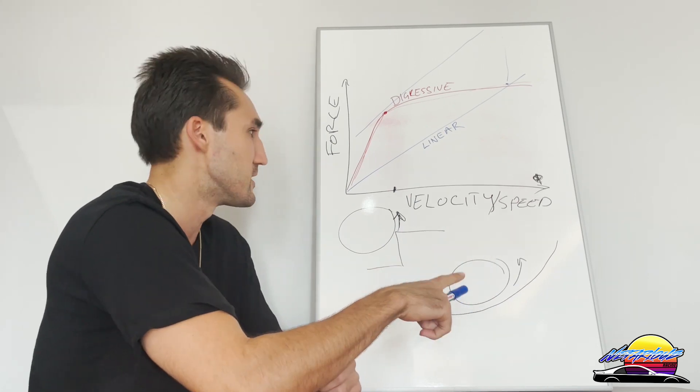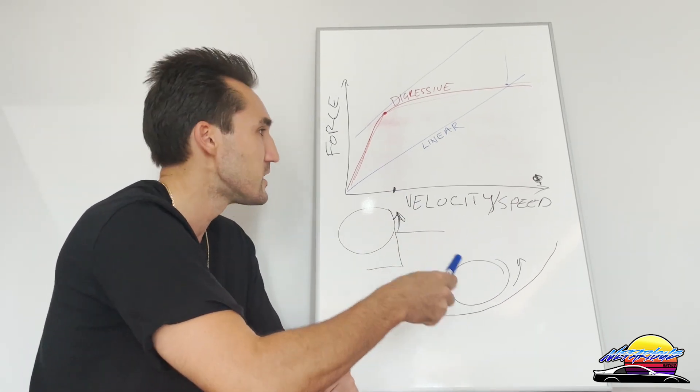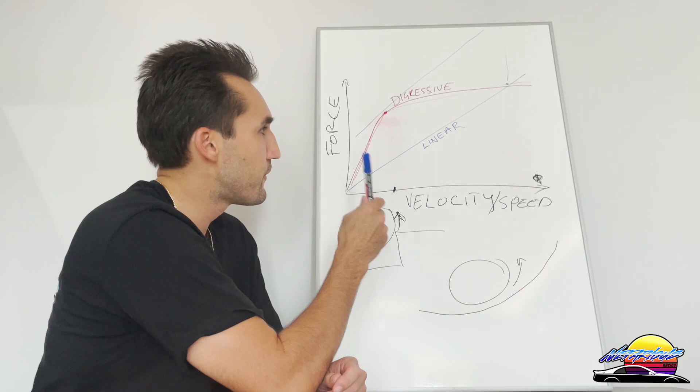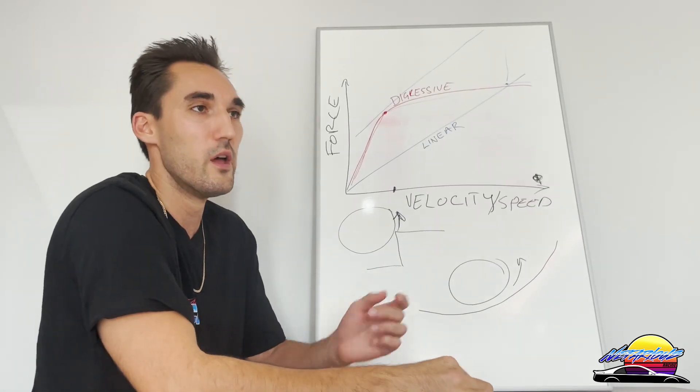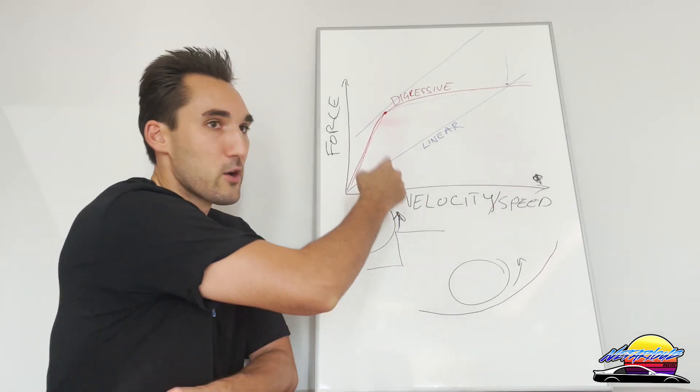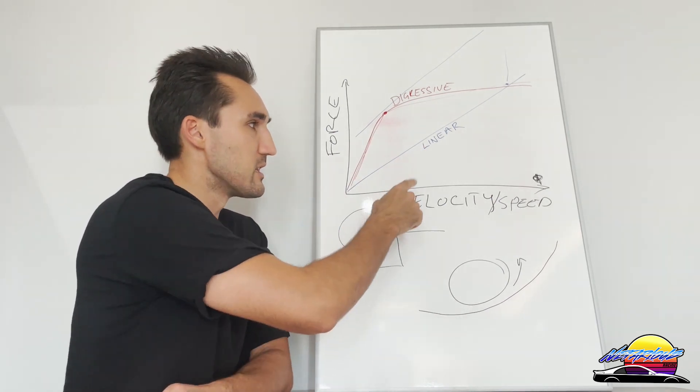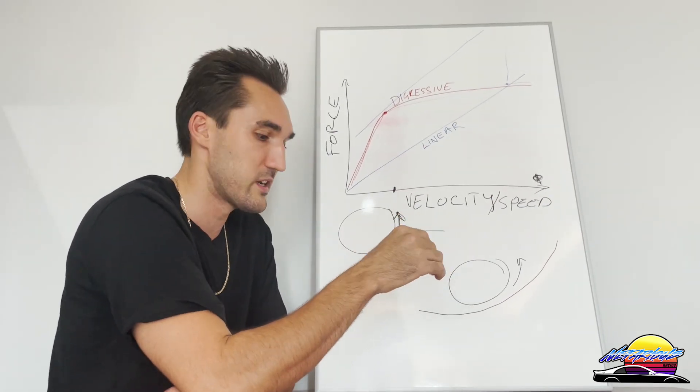If you're using the car primarily for street use, linear damping is what you want to go with, and basically most street-based kits have linear damping. If you're going to be using the car primarily for motorsport, some kind of racing, then you want digressive damping. Fortune Auto, for example, uses digressive damping and different variations of it in practically all their coilovers because they're designed for track use. Whereas BC Racing, most of their kits are linear except for the specifically digressive ones.